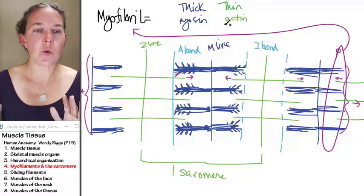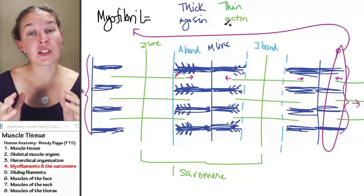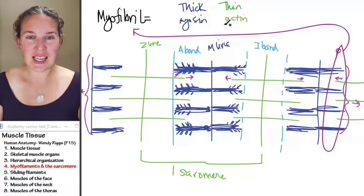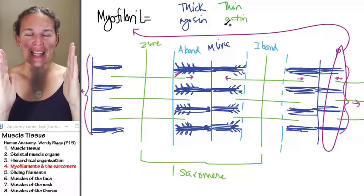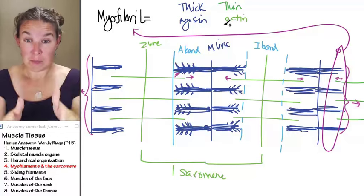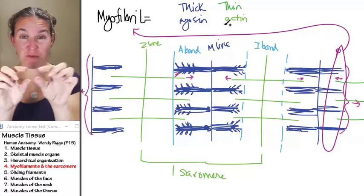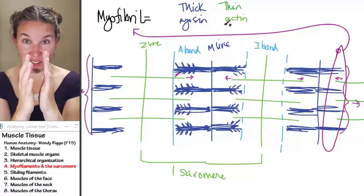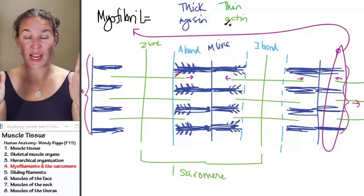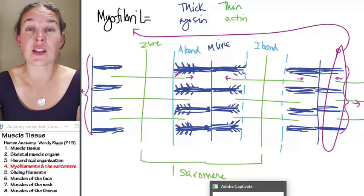Let's look at how this functions. The entire sarcomere shortens as the myosin fibers pull the actin filaments together. I can see how that whole thing shortens, then relaxes again. But I think it's more helpful to look at it in an animation.